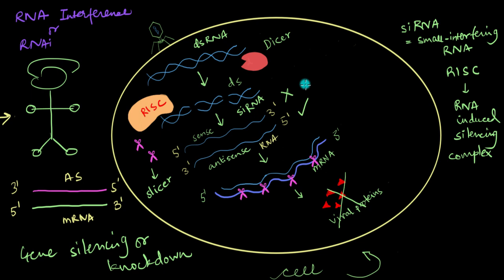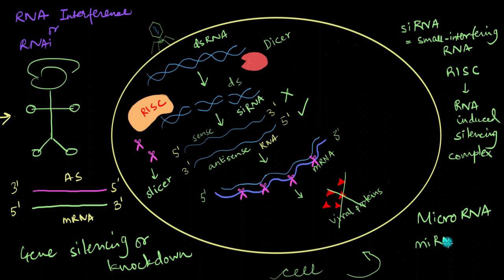RNA interference doesn't just protect you from outside threats like viral RNAs — it also protects you from inside threats. One of these threats comes in the form of something called micro RNA, or miRNA. These micro RNAs have been long associated with the development of various types of cancer. If we don't get rid of them, we might succumb to cancer more often. Thankfully, RNA interference can also play a part and get rid of these micro RNAs.